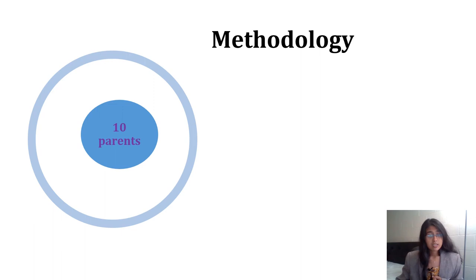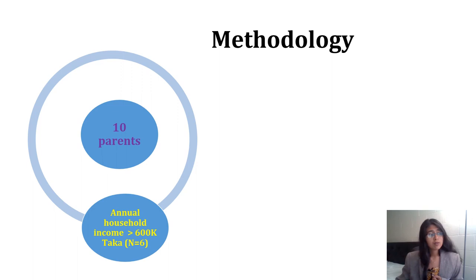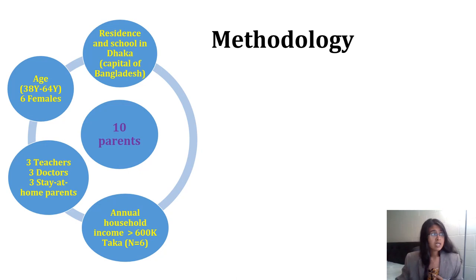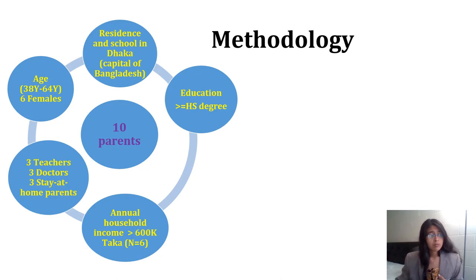Talking about methodology, we collected 10 participants through snowball sampling and conducted semi-structured interviews with all 10 of them. We found that the annual household income for at least six of those families was more than 600,000 taka — where one US dollar is roughly equivalent to 85 taka. Most participants were working professionals, and only three out of 10 were stay-at-home parents. They were aged between 38 and 64 years, six of them were females — that is, mothers of the autistic kids — and they were mostly settled in Dhaka, the capital city of Bangladesh and the hub of all facilities in the country.